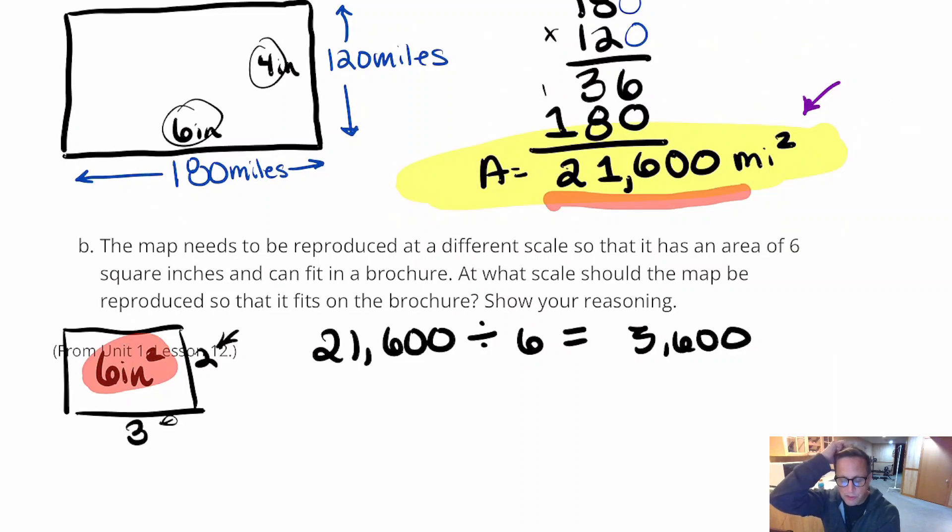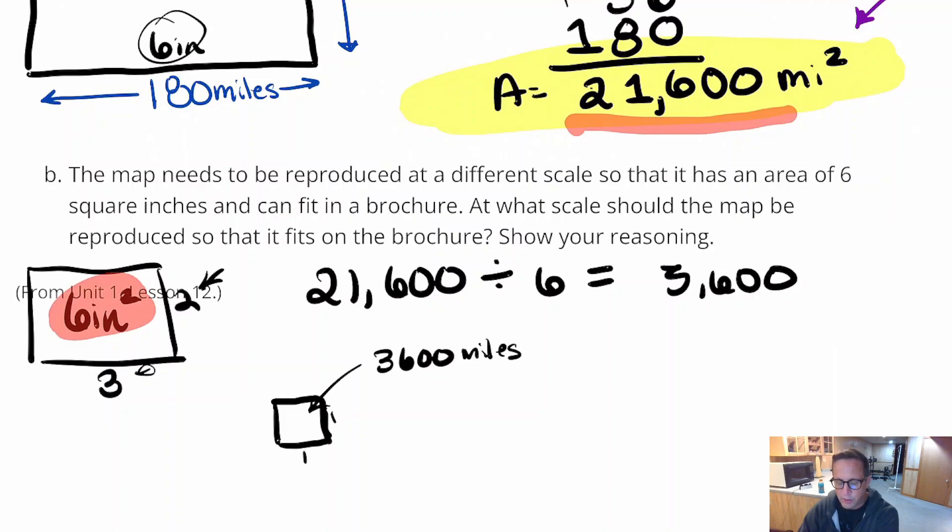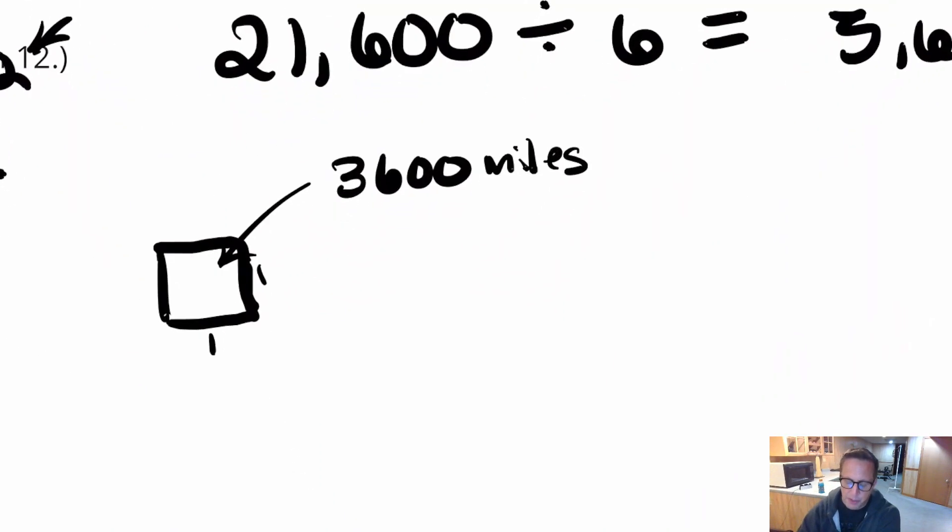What we need to happen is, we need each square inch to represent 3,600 square miles. So every square inch is going to represent that. So what that means is, we need to make each square inch 60 miles. You need to make this like 60 miles by 60 miles. In other words, I'm just saying that every inch on this map, for this particular problem, every inch is going to have to equal 60 miles.